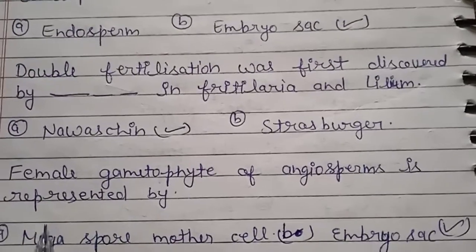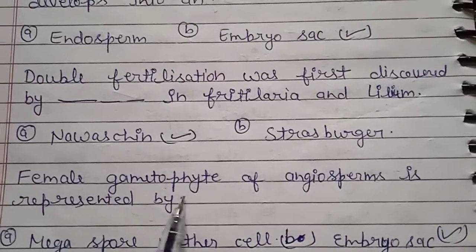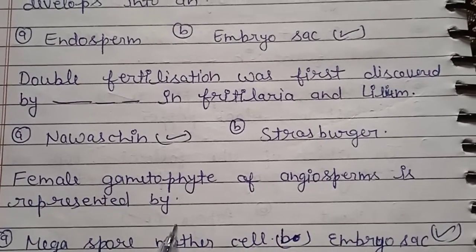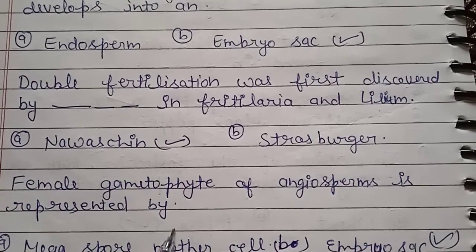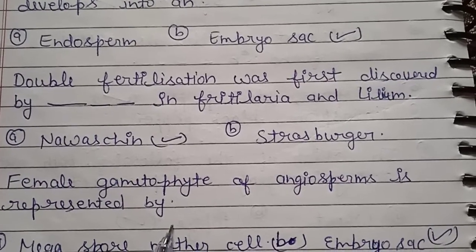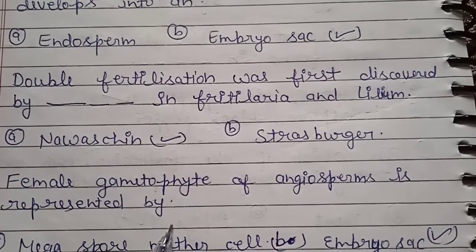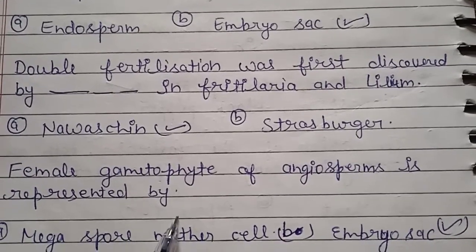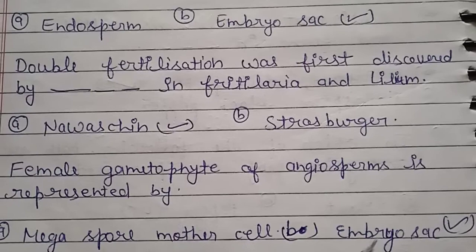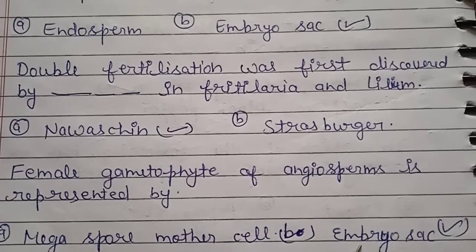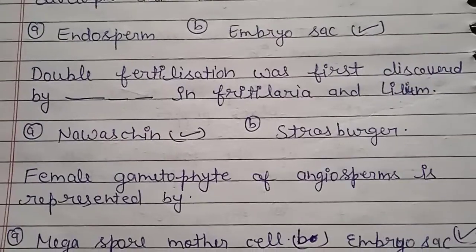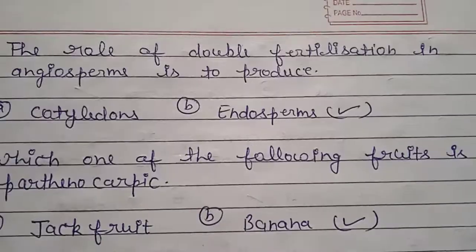Question number 11: the female gametophyte of angiosperm is represented by what? The female gametophyte of angiosperm is represented by the embryo sac, so the right answer is embryo sac.